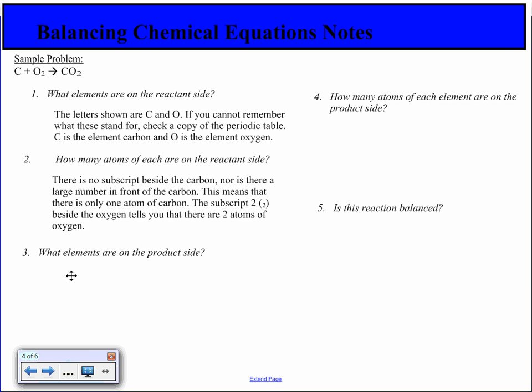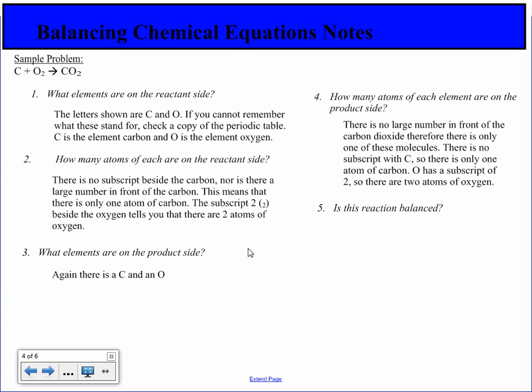What elements are on the product side? Again, we have carbon and oxygen. How many atoms of each element are on the product side? There is no large number in front of the carbon dioxide, therefore there is only one of these molecules. There is no subscript with carbon, so there is only one atom of carbon. Oxygen has a subscript of 2, so there are two atoms of oxygen.